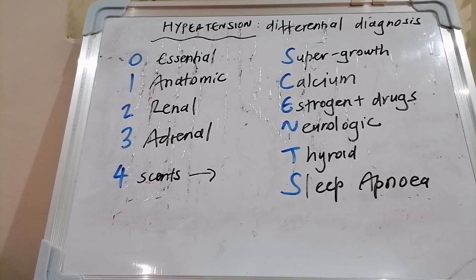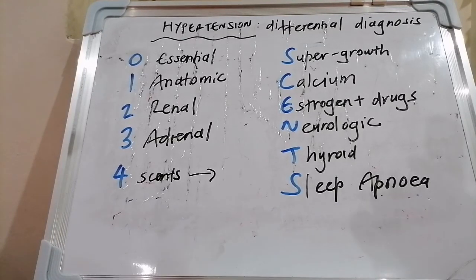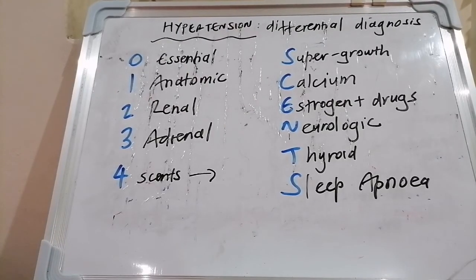So there you go guys — secondary hypertension and a differential for that: 0-RENAL SCENTS. God bless you.